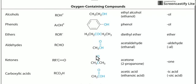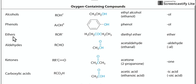The last oxygen-containing compound is carboxylic acid, with the general formula COOH. This is the only functional group with two oxygens, and it's found on the terminal end because of the hydrogen. To recap the six oxygen-containing groups: alcohols have OH; phenols have OH plus a benzene ring; ethers are COC; aldehydes are C double bond O with H; ketones are just C double bond O; and carboxylic acids are COOH.